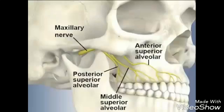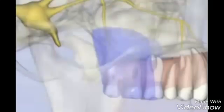Nerves anesthetized: Posterior Superior Alveolar Nerve. Areas anesthetized: Pulps of the maxillary third, second, and first molar.